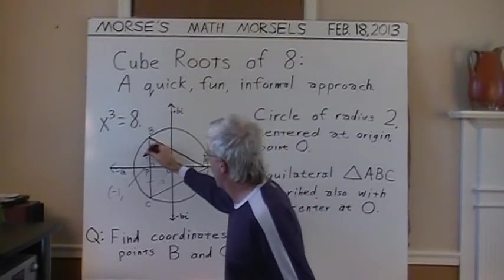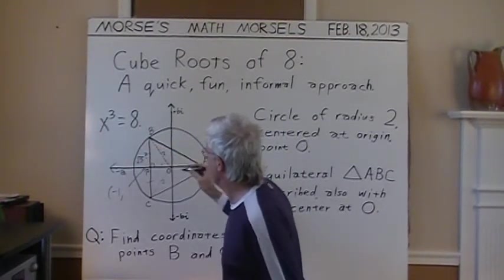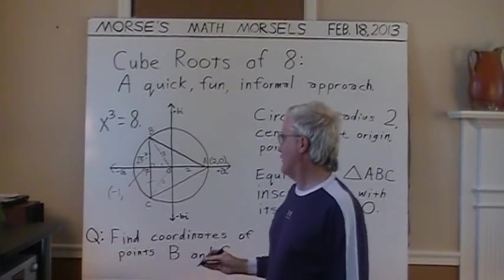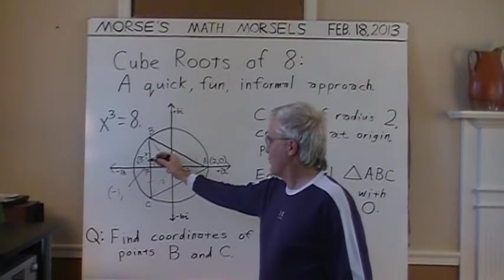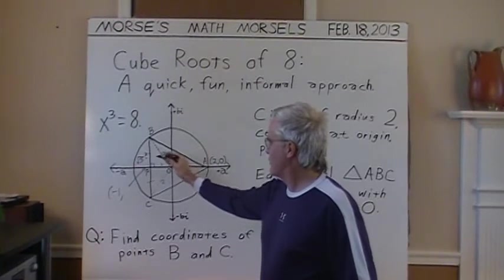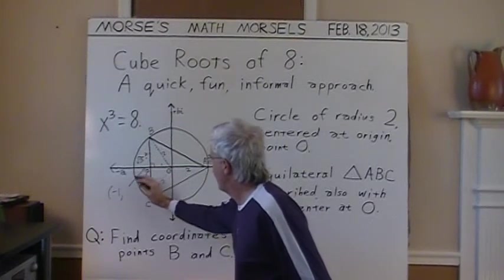So, this is going to turn out to be square root of three, using the Pythagorean theorem, because one squared plus this squared, the square root of three squared is just three, and sure enough, one plus three is four, and four is two squared.